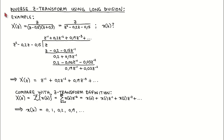Another way to calculate the inverse Z-Transform is by using long division. We apply it to the second example from the previous page, where we wish to find the time domain signal of Z divided by Z squared minus 0.2 times Z minus 0.15. The idea of long division is to find an infinite series that, when multiplied with the denominator, gives us the numerator. We place the numerator and denominator in the long division setup.